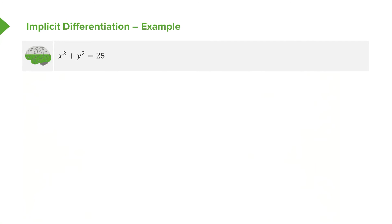Here we have our first example: x² + y² = 25. We're going to talk about how to differentiate it. If you didn't know how to differentiate implicitly, you might just rearrange this equation in terms of y and then differentiate it. There's nothing wrong with that.